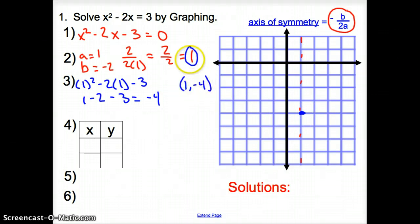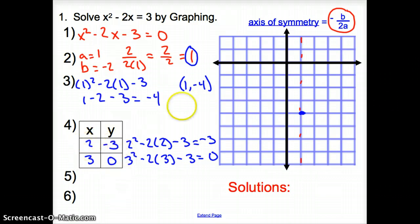Now I'm going to pick coordinates greater than or less than my axis of symmetry. Since my axis of symmetry was 1, I'm going to pick coordinate points 2 and 3. I'm going to plug this 2 in for my equation. So I get 2 squared minus 2 times 2 minus 3. I get negative 3. Again with 3, I plug it in. So it's 3 squared minus 2 times 3 minus 3, and that gives me 0. I'm going to graph these two points. So 2 down 3, then 3, 0.